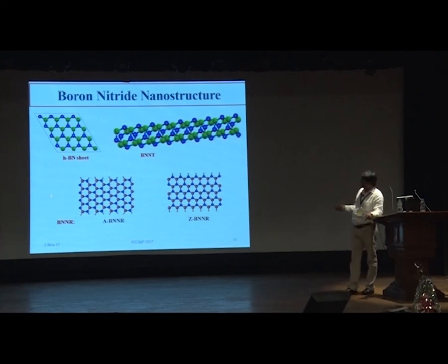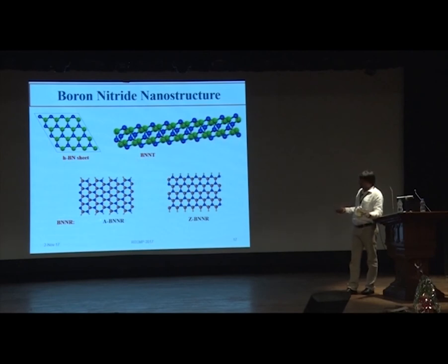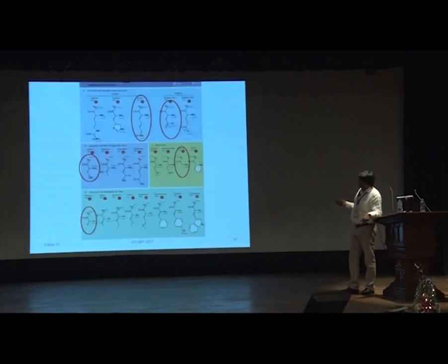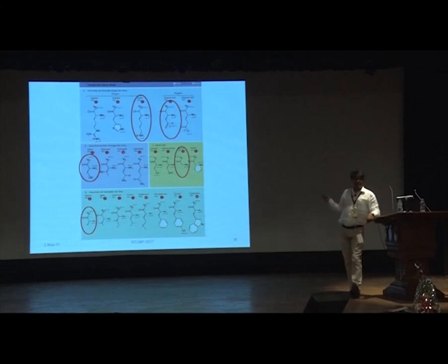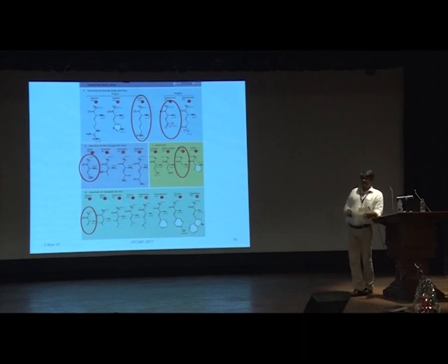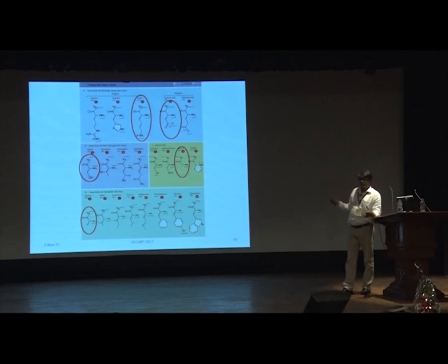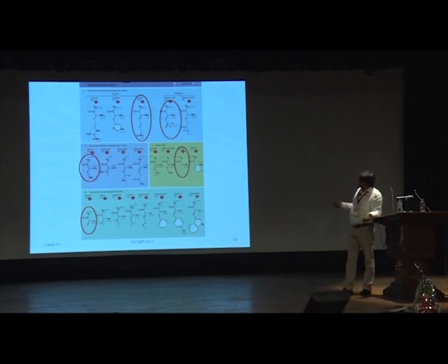The systems considered are: the hexagonal boron nitride sheet (h-BN), boron nitride nanotube, and boron nitride nano-ribbon in both armchair and zigzag configurations — four systems in total. The first set of biomolecules considered is amino acids, with three different groups: basic, acidic, and neutral. At least one amino acid from each group has been selected to examine properties and adsorption with these boron nitride nanostructures.